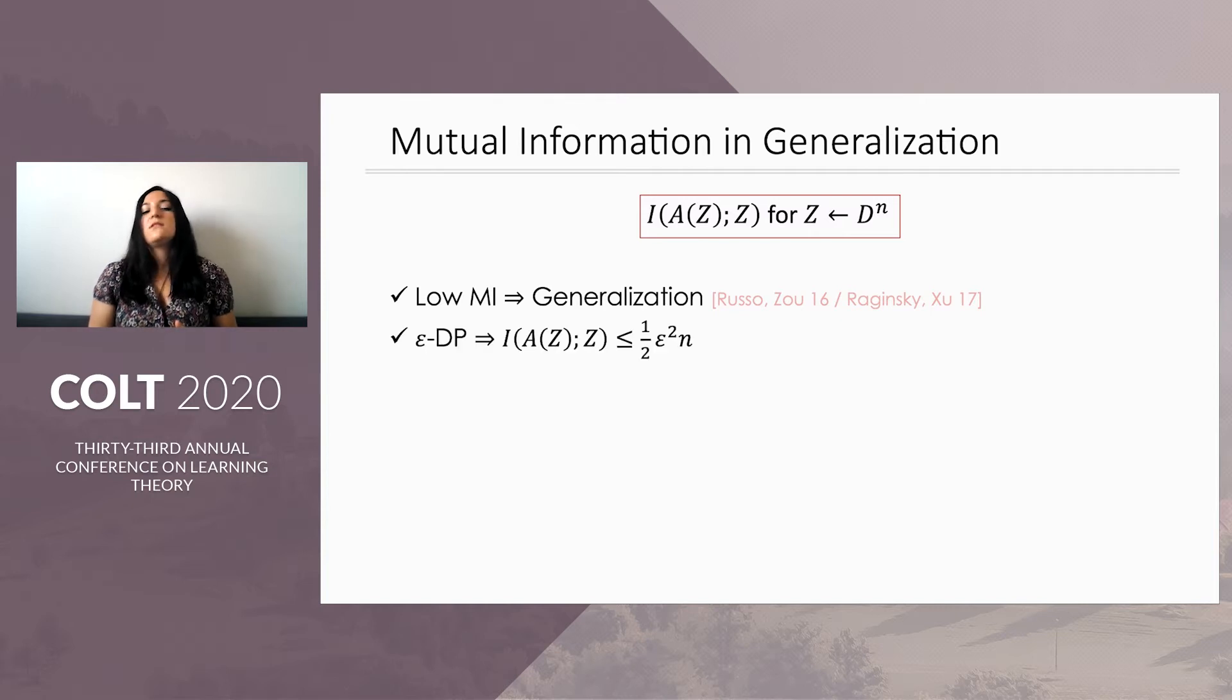In particular, epsilon differential privacy, which we call pure differential privacy, implies a bound of epsilon squared n over 2. And we also have the generic bound of log of the size of the output space, which comes from the Shannon entropy of the uniform distribution over the output space.